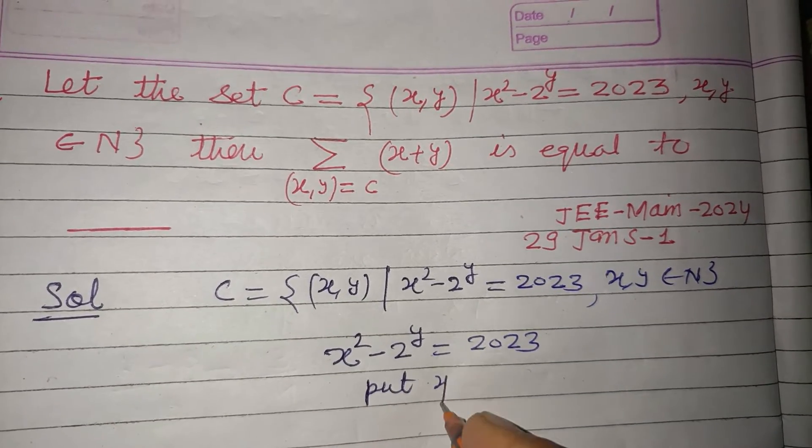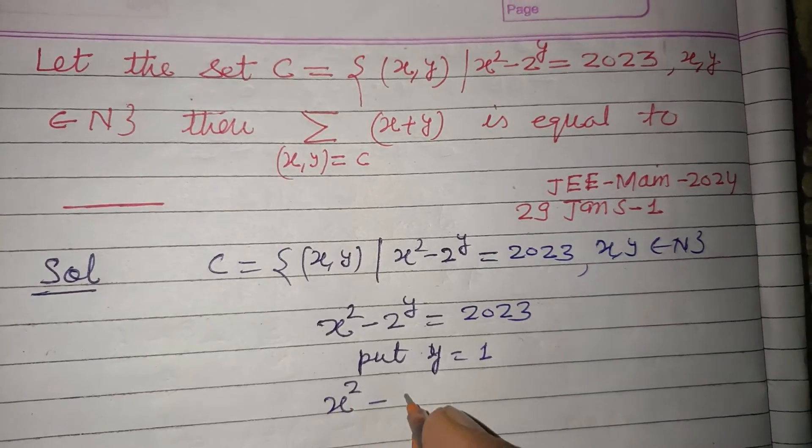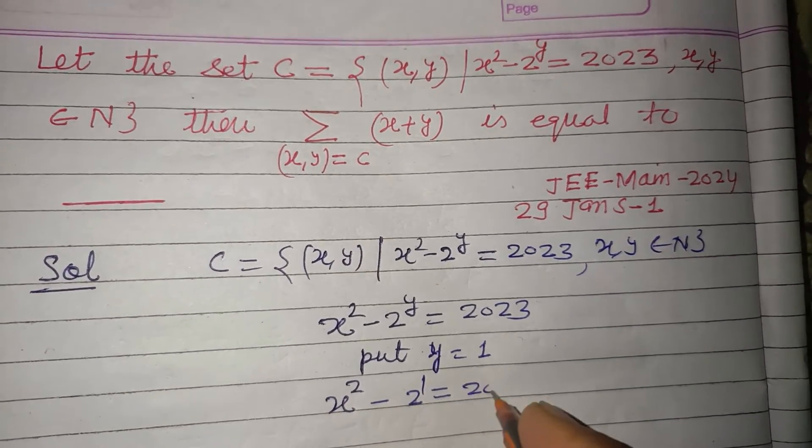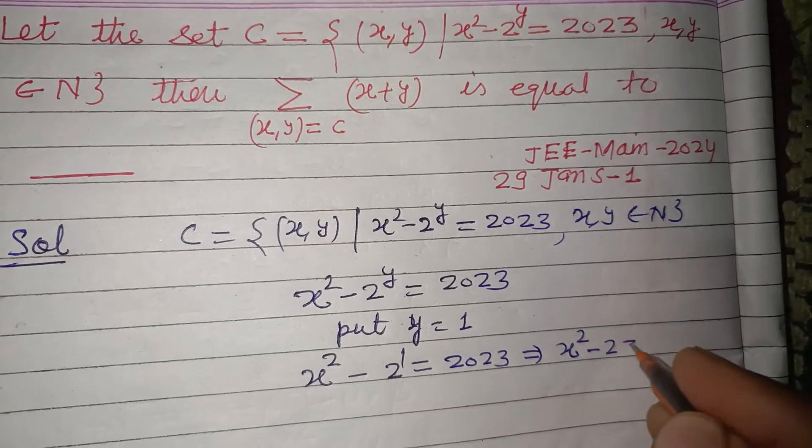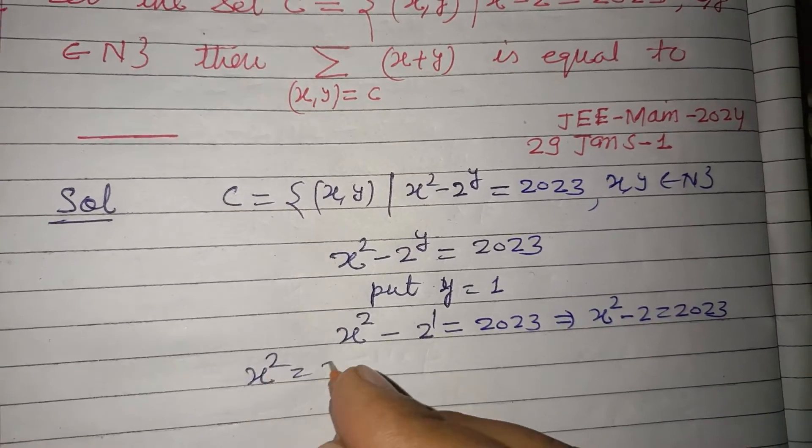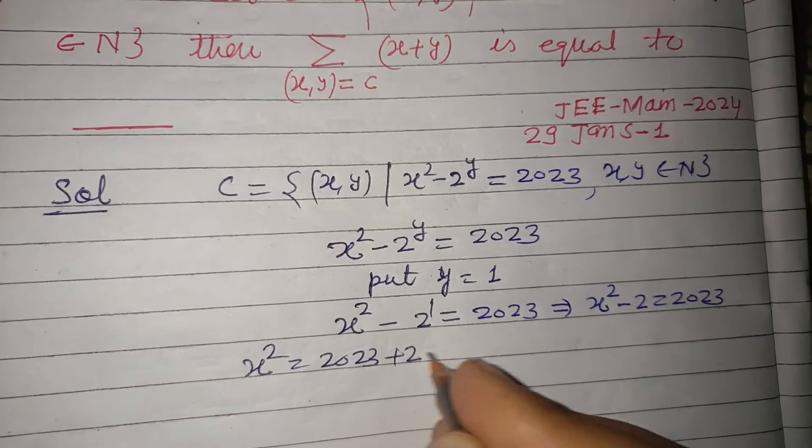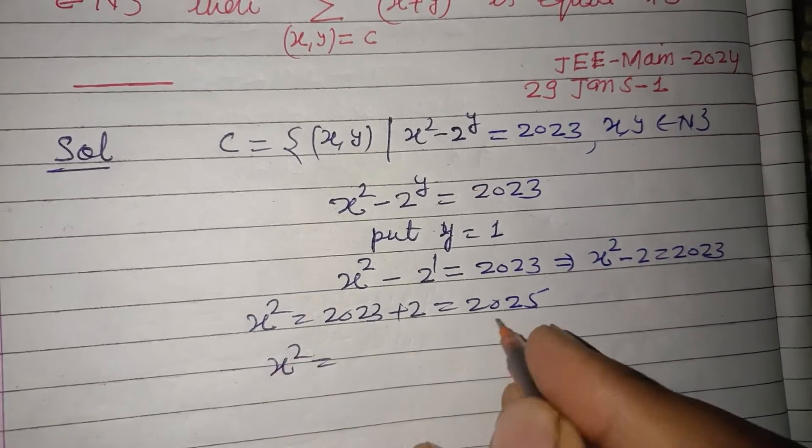Put y = 1. So x² - 2¹ = 2023, which means x² - 2 = 2023. Therefore x² = 2023 + 2, which is 2025.